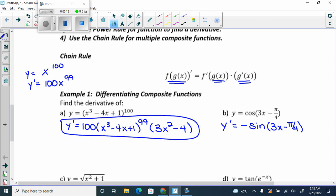Then what do I have to do? 3x minus pi over 4. 3x minus pi over 4 in a chain behind it. What's the derivative of 3x? 3. What's the derivative of minus pi over 4?